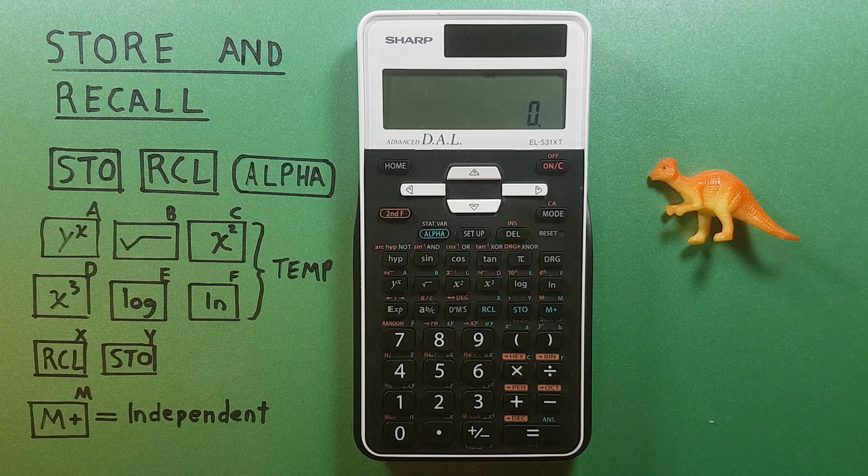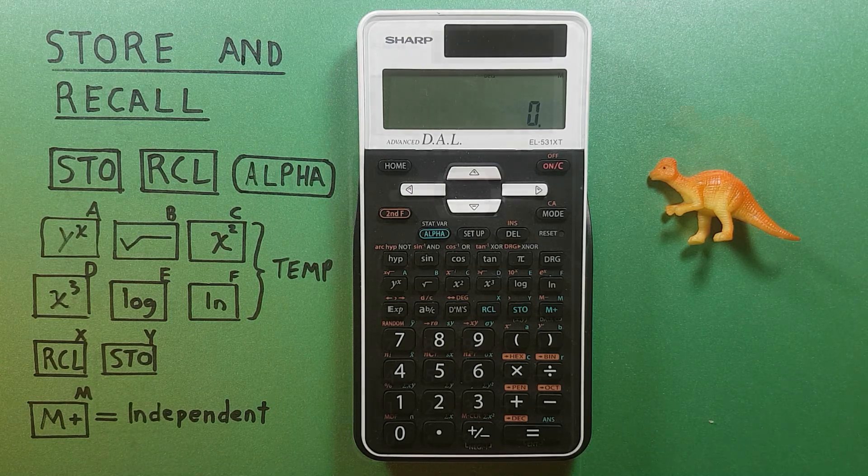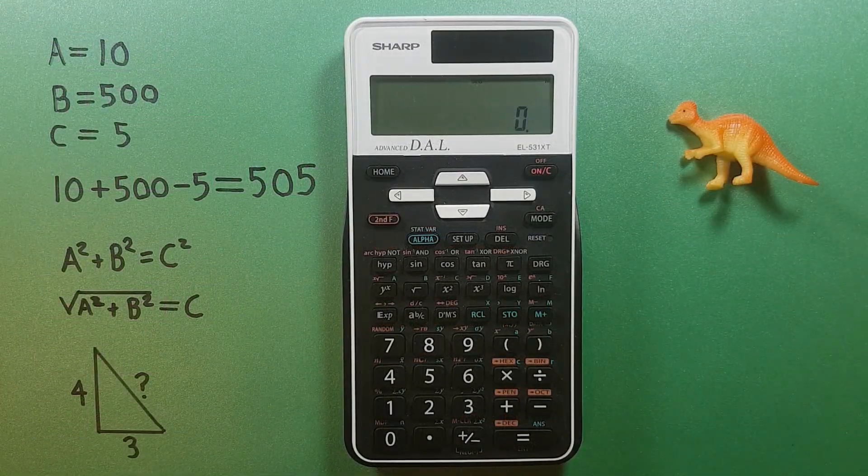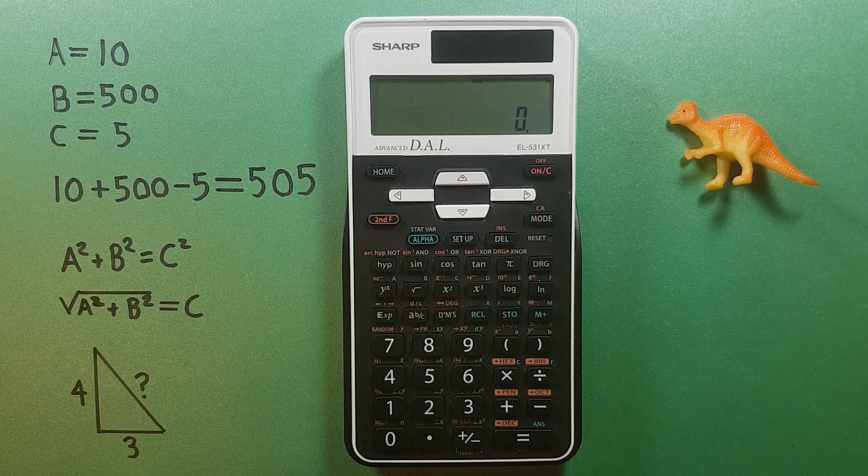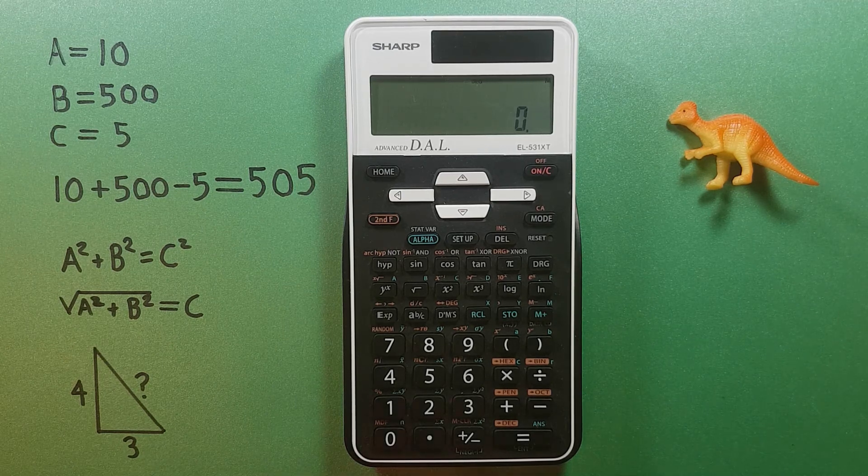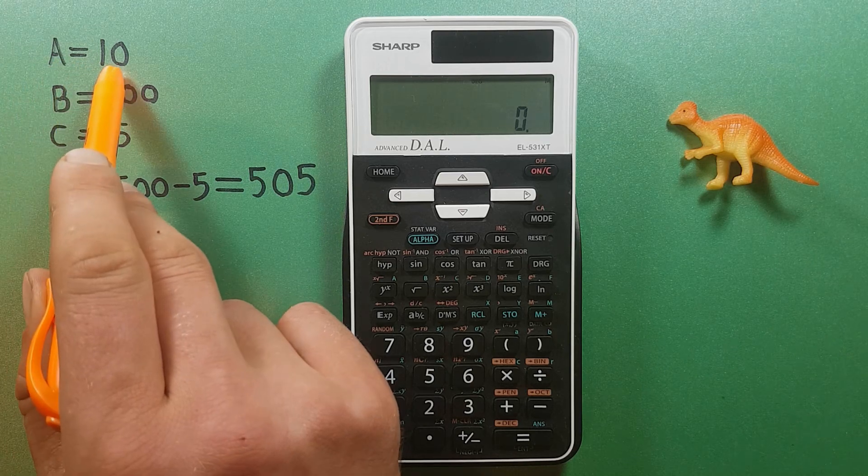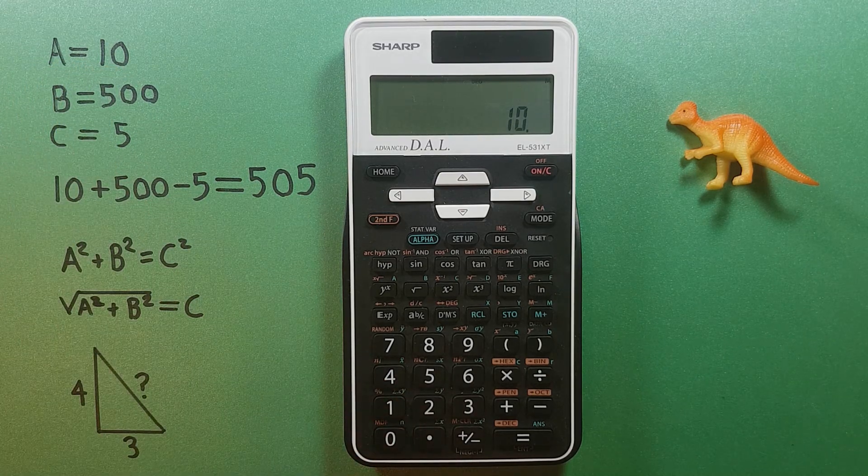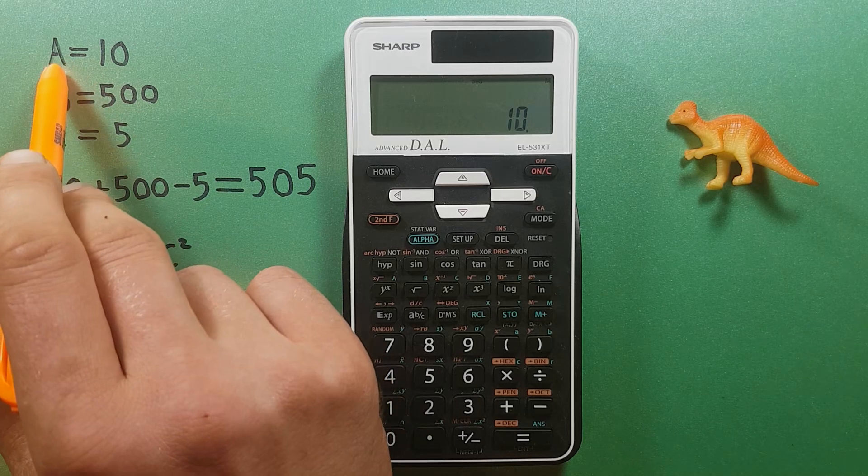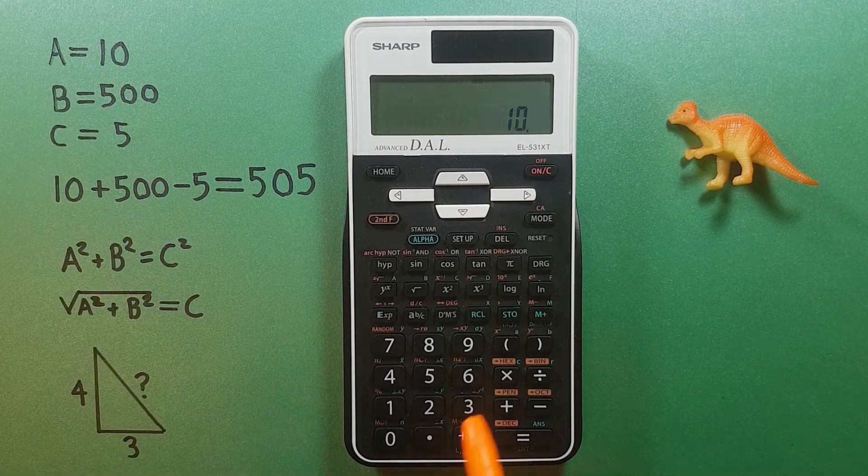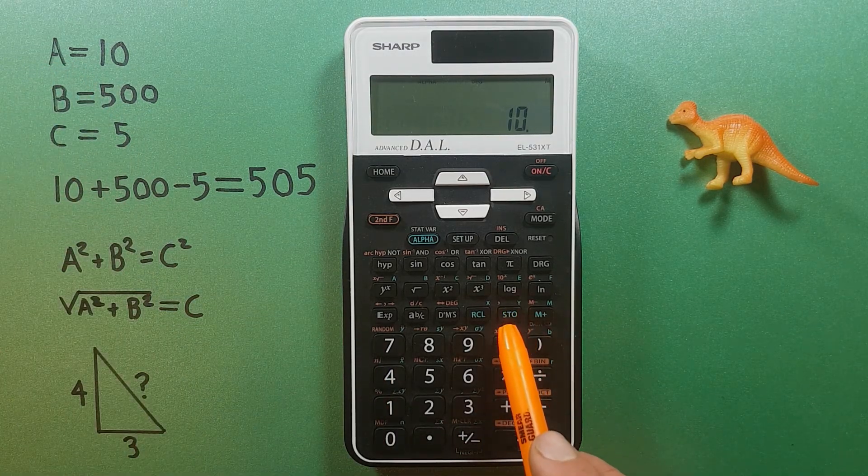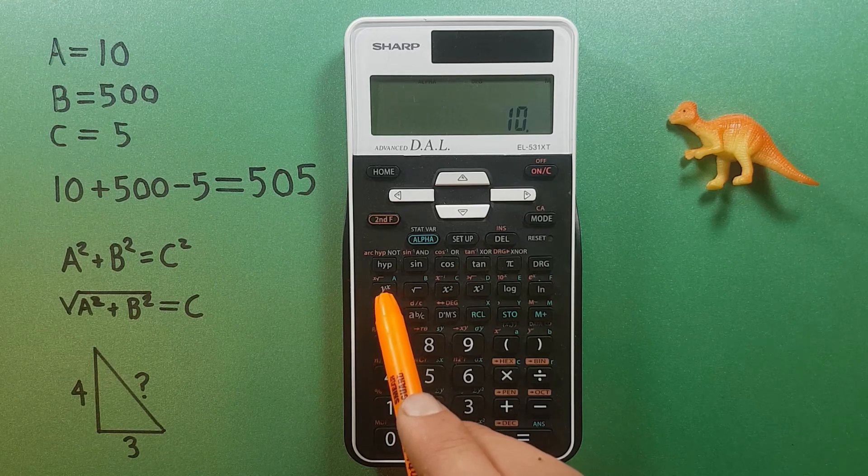Let's try entering some data and see how this goes. We'll start by entering the first number we want to store, number 10, on the screen. If we want to store it into the A slot, we would press STO and then this A button here.